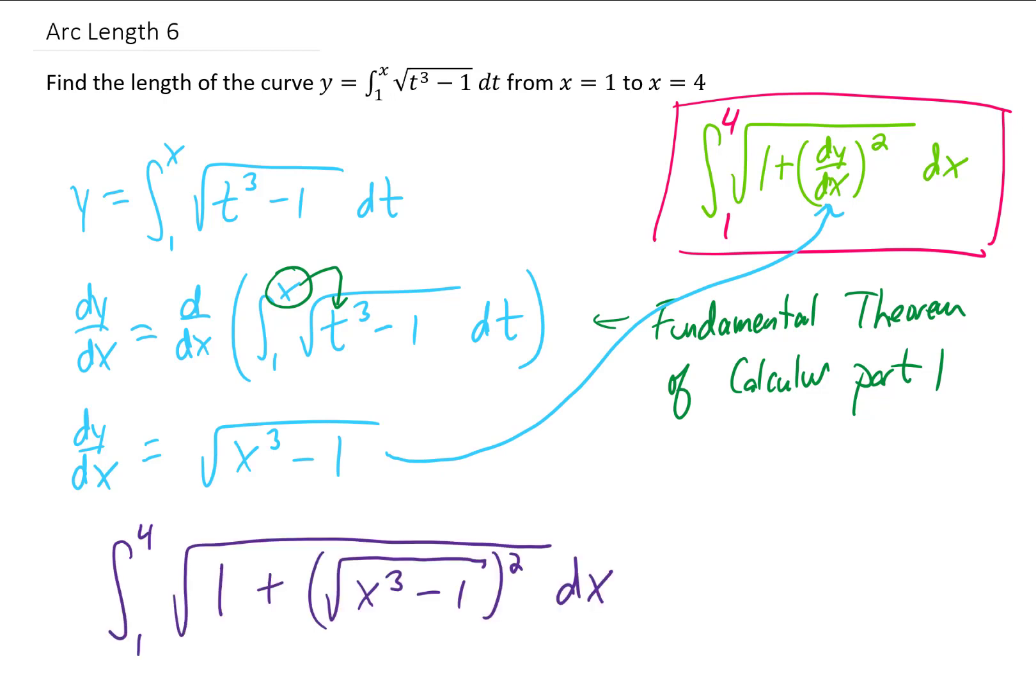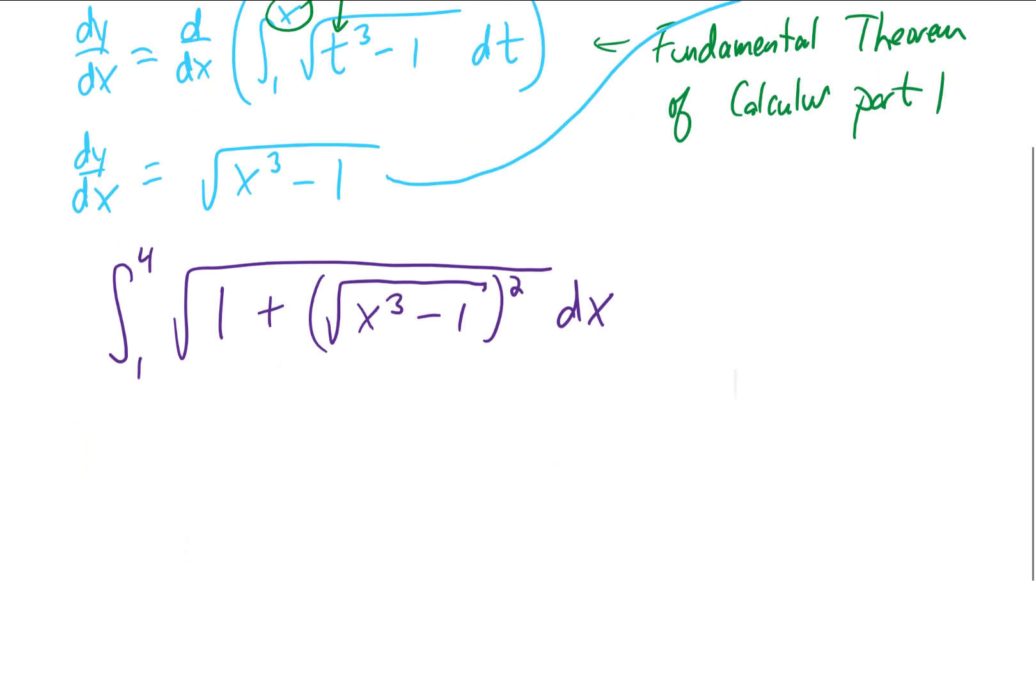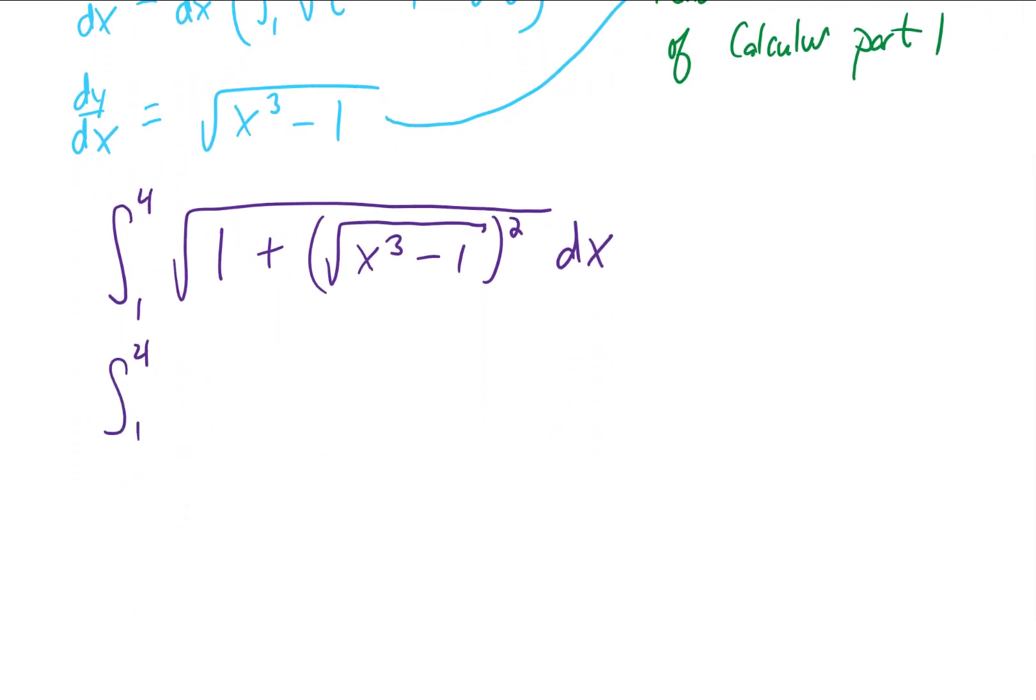Well, when we plug that dy dx into our formula for our arc length, it looks pretty convenient to me. The reason it's convenient is because this square root and this square cancel each other out. Even more convenient is the fact that the one and the minus one cancel.